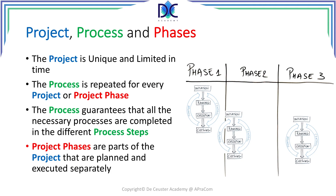We can also have a look at the project, the process and the different phases. Projects are unique and limited in time. The process however is repeated for the project but also for every project phase. In the example we see a project which is composed of three phases: phase one, phase two and phase three. For each of those phases we will execute the project management process.